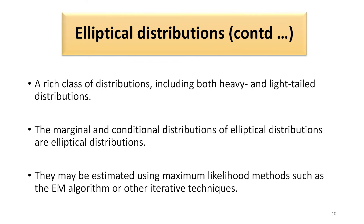The class of elliptical distributions can be looked upon as a very rich class of distributions because they include both heavy and light tail distributions. If we look at the marginal and conditional distributions of an elliptical distribution, those are also going to be elliptical distributions. The parameters of the elliptical distributions may be estimated using the maximum likelihood method, such as the EM algorithm or any other related iterative techniques.